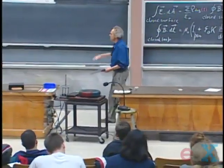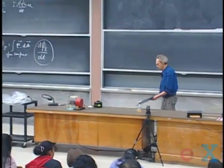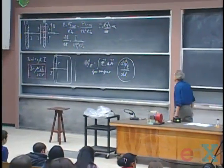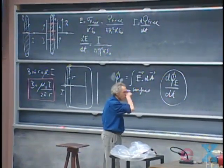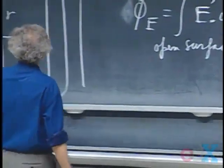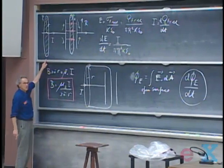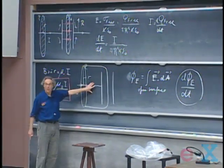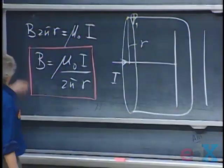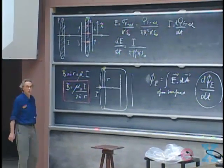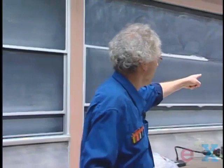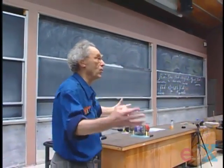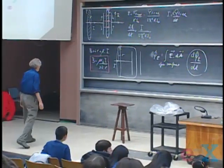Now I'd like to use the new law and see whether we can clean up that mess. I'm going to revisit P1 and apply the new law, first using a flat surface, and then trying the bagged surface — I want to get the same answer. If I use the flat surface, there is a current going through it but no electric flux, so the displacement current term is zero. This answer is completely valid.